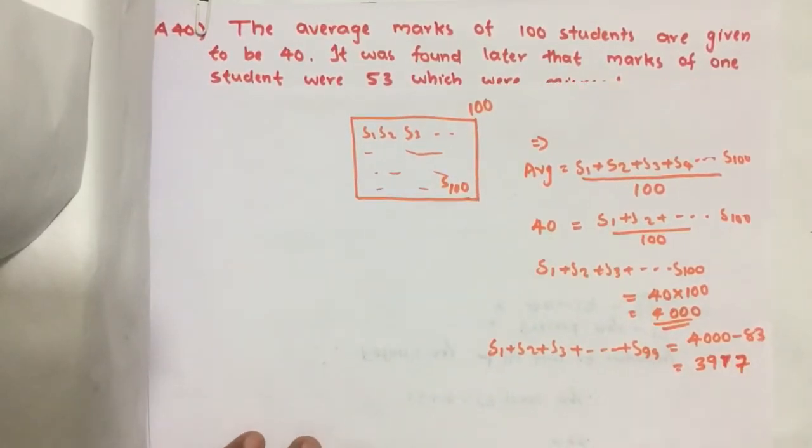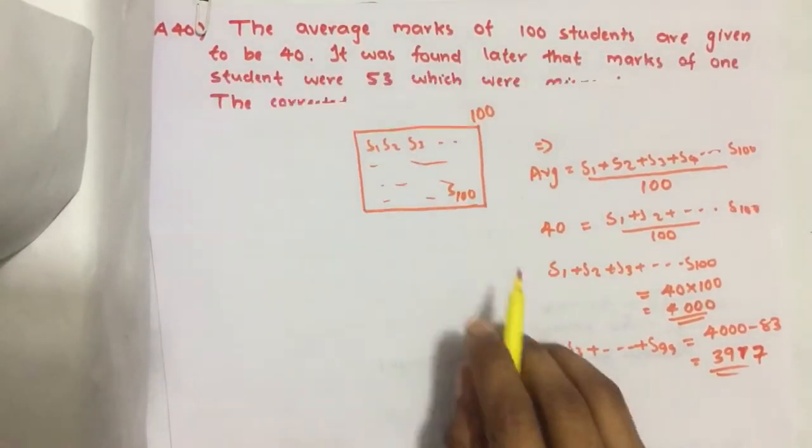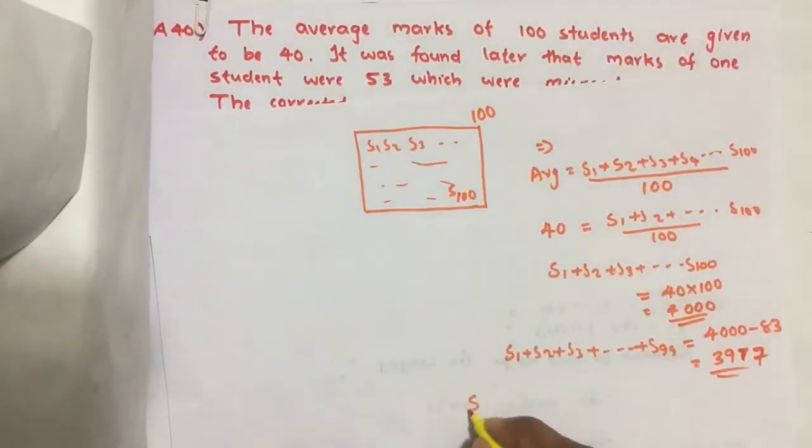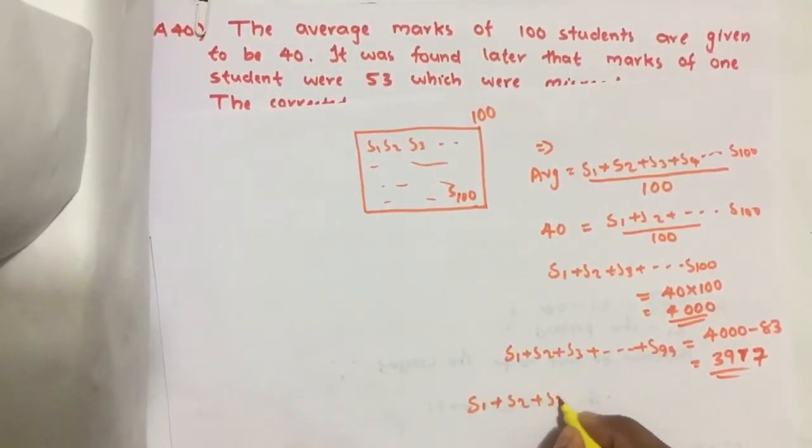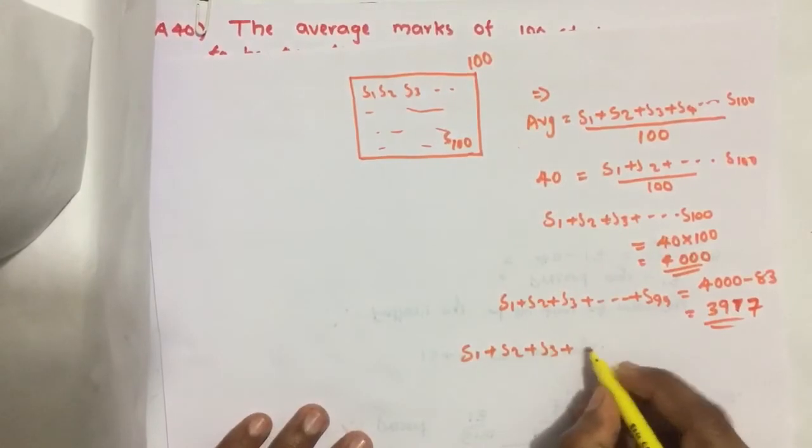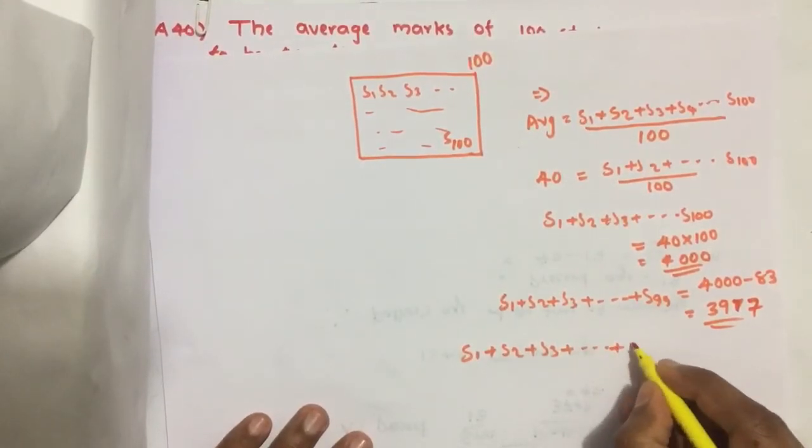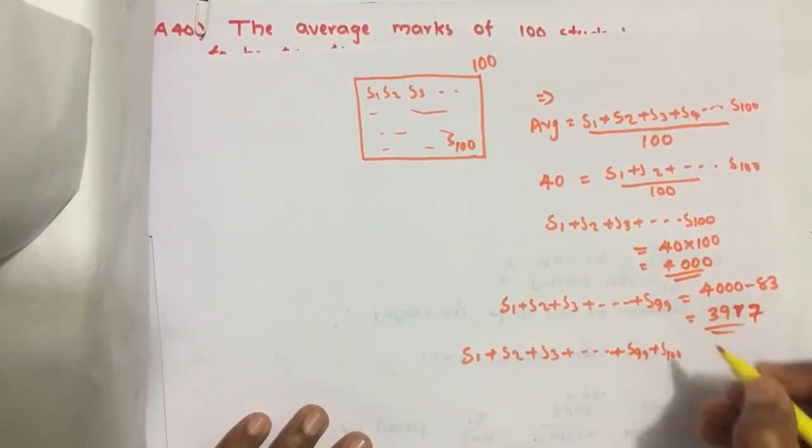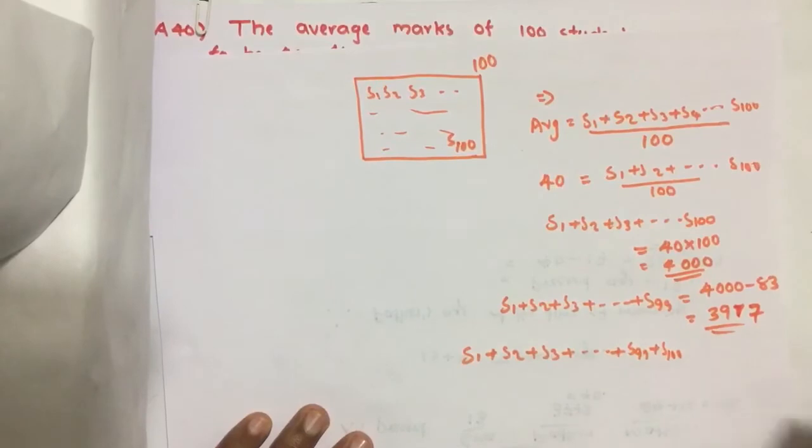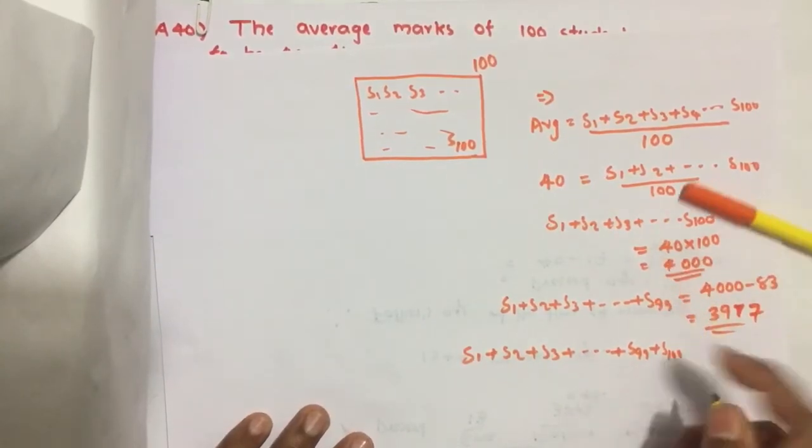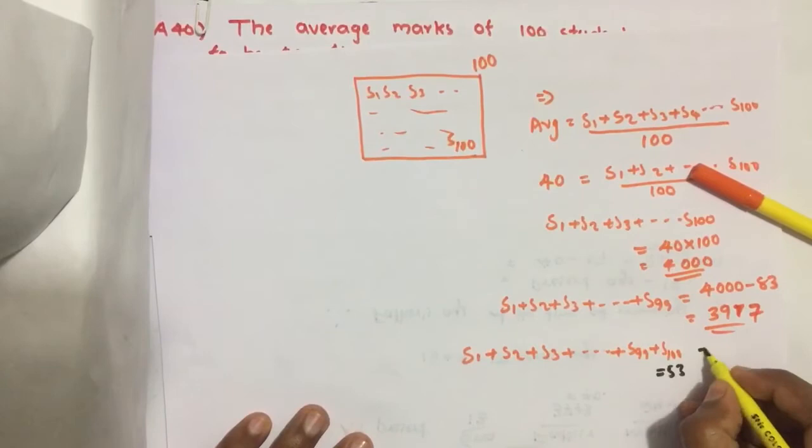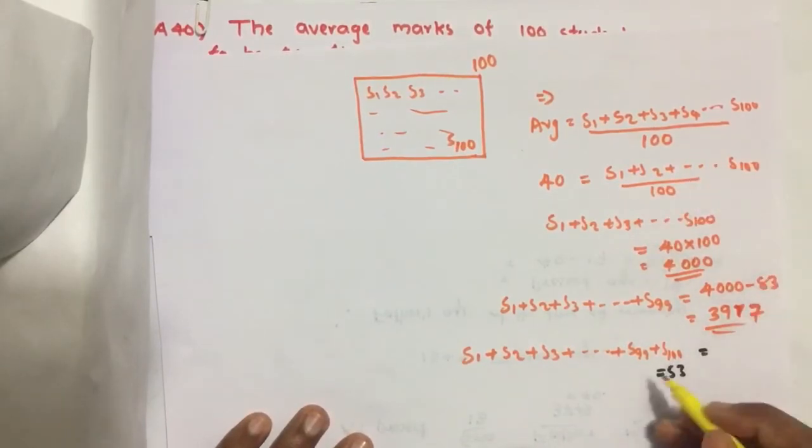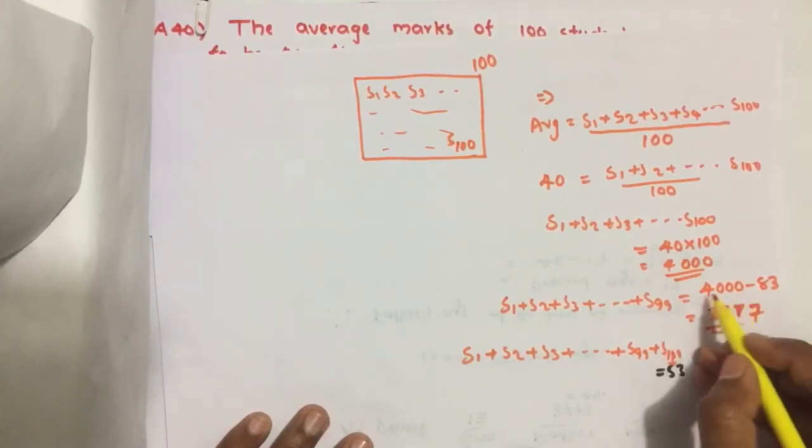3917. And then we add this mark of that 100th student, which we removed here, which is equal to how much? 53 to this. This is mark of this 100th student which we removed from earlier.